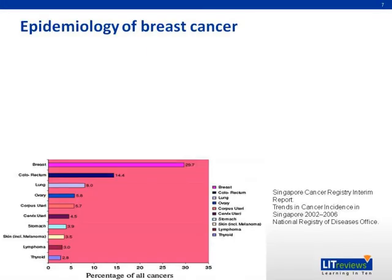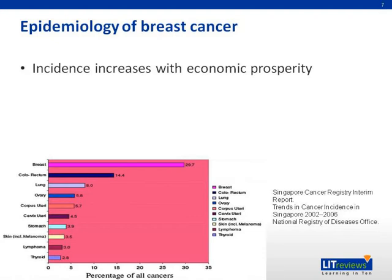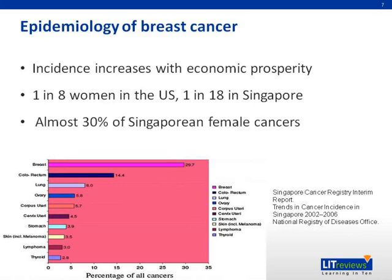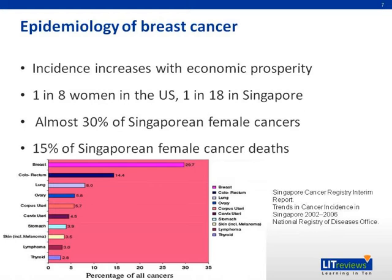Breast cancer is primarily a disease of developed nations, and its incidence increases with progressive affluence. It affects approximately one in eight American women, one in 11 British women, and one in 18 Singaporean women. It is by far the most common female non-skin cancer and accounts for approximately 30% of female cancers in both Singapore and the US. Locally, it accounts for 15% of all female cancer deaths.